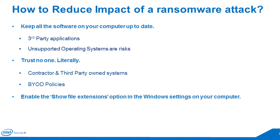Keep everything up to date — this is not rocket science, just basic things many organizations don't do. Browsers say if we update, we won't be able to use certain applications. If organizations decide not to update third-party or high-risk applications, somebody should take acceptance of that risk — the risk should be identified and accepted by someone with the authority to do so.